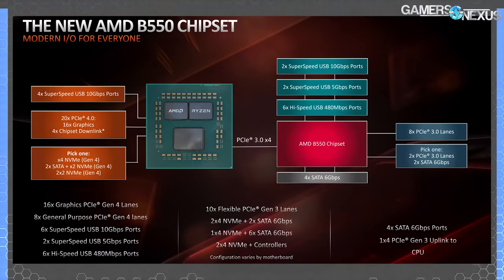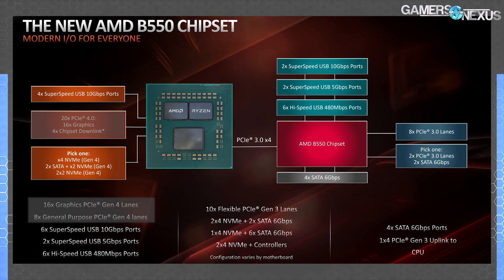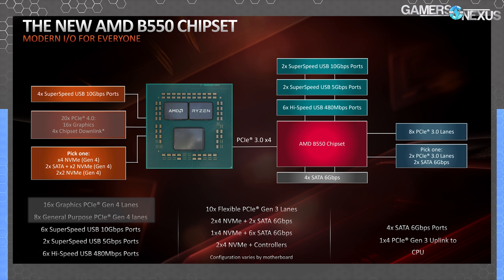Let's get into a block diagram. This is AMD's block diagram of the AMD B550 chipset. It's not particularly helpful but gives a good wider picture. Remember that the CPU's capabilities are independent and unchanged by the chipset outside of BIOS lockdowns. PCIe Gen 4 will run on the CPU directly to the primary PCIe x16 slot and the primary M.2 device.